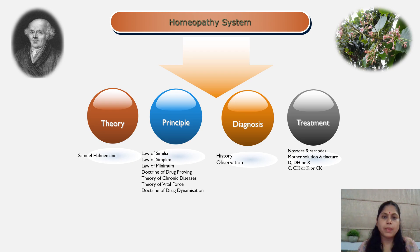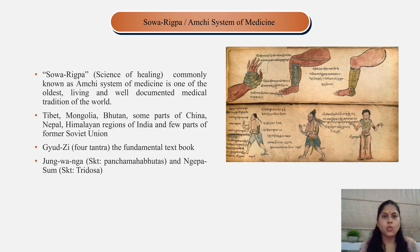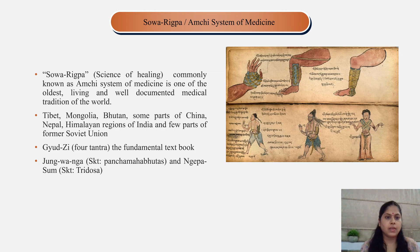Plants are widely utilized in the homeopathy system to cure human beings. The next recently added traditional system is Sova Rigpa, or the Amchi system of medicine — one of the oldest and well-documented traditional medicine systems in the world. The term Sova Rigpa is derived from the Bhoti language and means 'knowledge of healing.' It is believed to have originated from India through Lord Buddha. This system is practiced in Tibet, Mongolia, Bhutan, parts of China, Nepal, Himalayan regions of India, and parts of the former Soviet Union. The Four Tantras (Gyushi) is the fundamental textbook of the Sova Rigpa system and describes Pancha Mahabhuta and Tridosha.